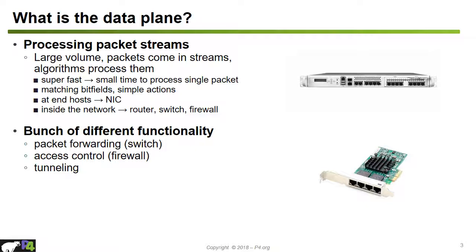The process of tunneling is to encapsulate a packet with an outer header that is then used, for example, at the next switch for determining the forwarding behavior. Traffic monitoring is another functionality implemented at the data plane in order to count how many packets have been received from a given flow or a given traffic aggregate.